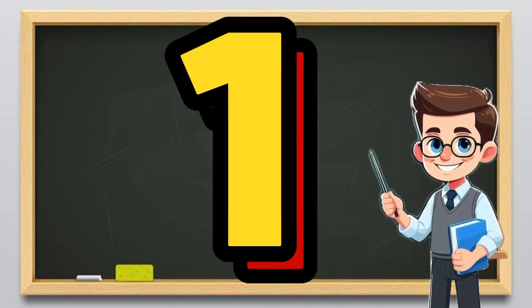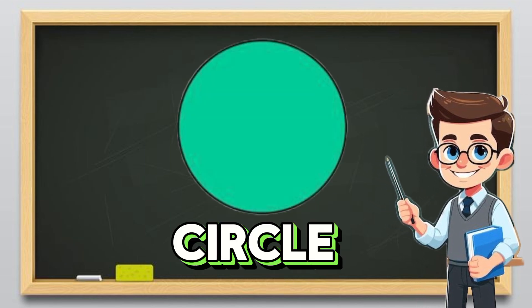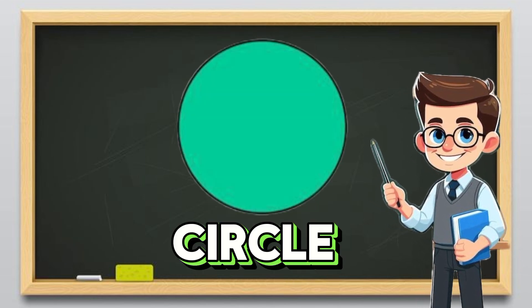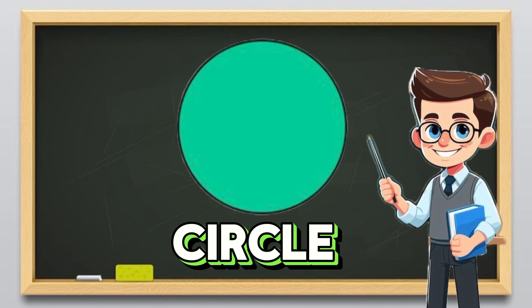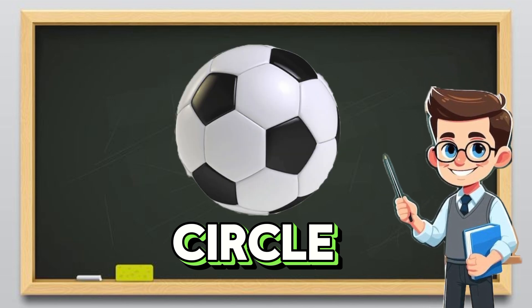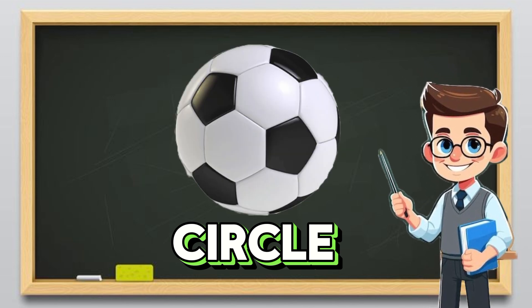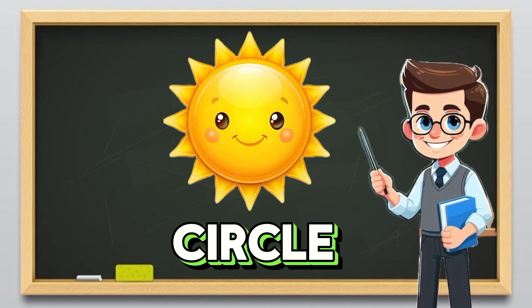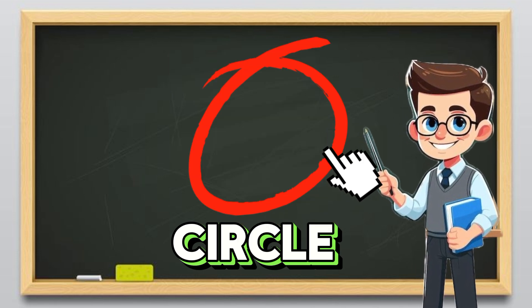One. Circle. A circle is round all the way around. It has no corners, just like a ball. Can you find a circle? It's round like the sun. Can you draw a circle in the air?